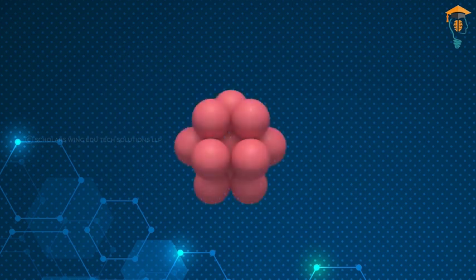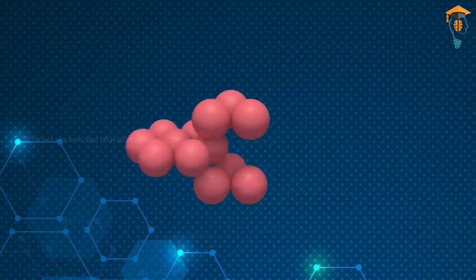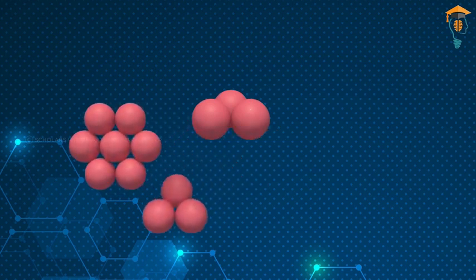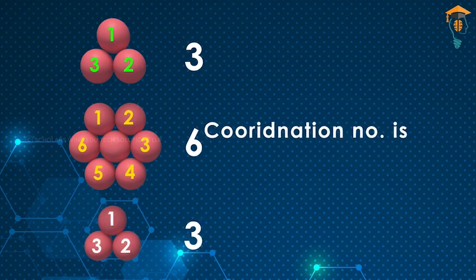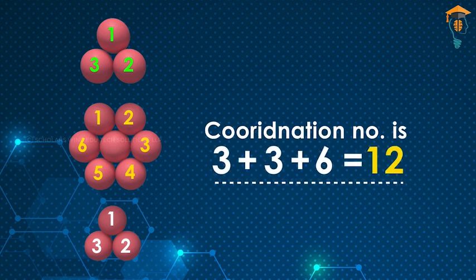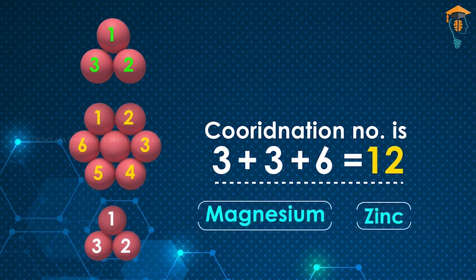In the HCP structure, each sphere is in contact with 12 other neighboring spheres: six spheres in the same layer, three spheres from the top layer, and three more spheres from the bottom layer. Hence the coordination number is 12. Such an arrangement of atoms is mostly found in certain metals like magnesium, zinc, etc.